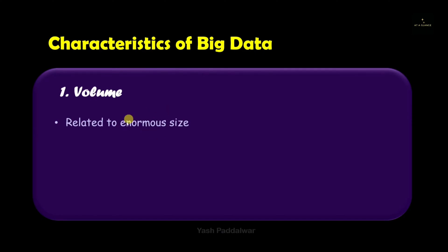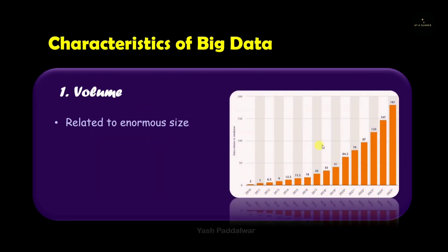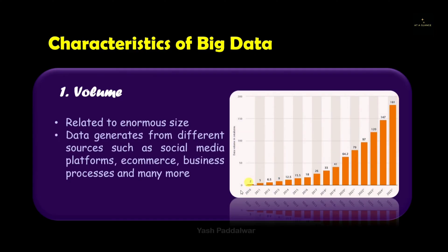The first characteristic, Volume, is related to the enormous size of data that exists today, and moreover it is increasing. There is a graph showing that back in the 2000s a very small amount of data was being created, whereas in 2022 and upcoming years the data will be generated exponentially. This data comes from different sources such as social media platforms, e-commerce, and business processes — all the real life examples of big data. Each of these sources creates data that adds up to a huge volume.